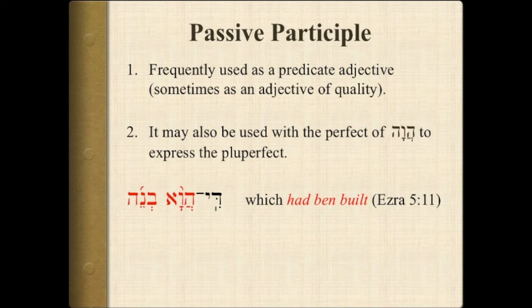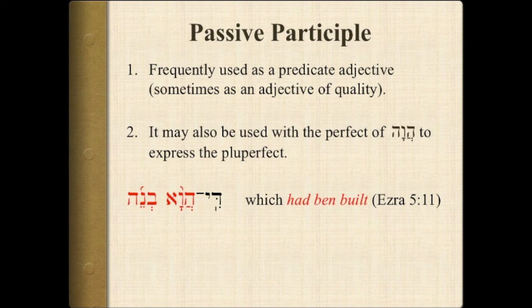The passive participle is frequently used as a predicate adjective, sometimes as an adjective of quality. It may also be used with the perfect of hava to express the pluperfect — something which has happened before the current time of the narration — so "which had been built."